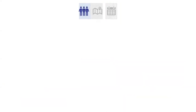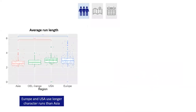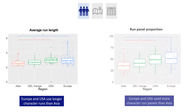Looking at character runs separately, we find that sequences of the same information are relatively short, between two and three panels. European and American comics use longer character runs than Asia, and this is reflected in the run panel proportions where they also use more character run panels. About 46% — a bit less than half — of panels in books were part of character runs.